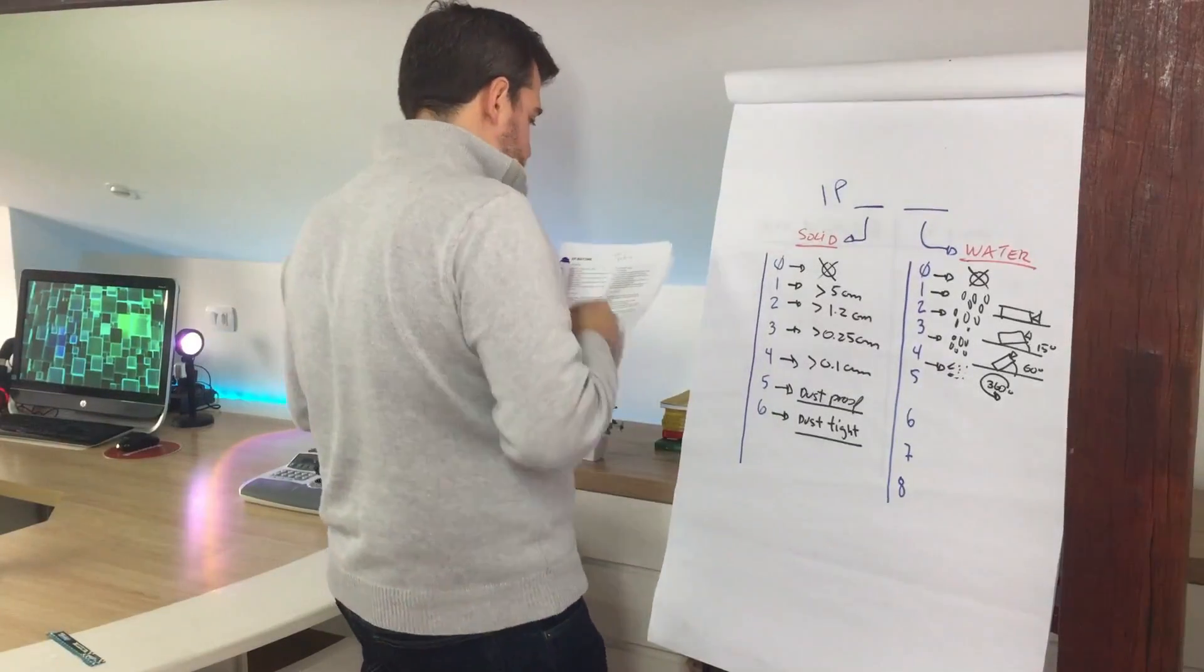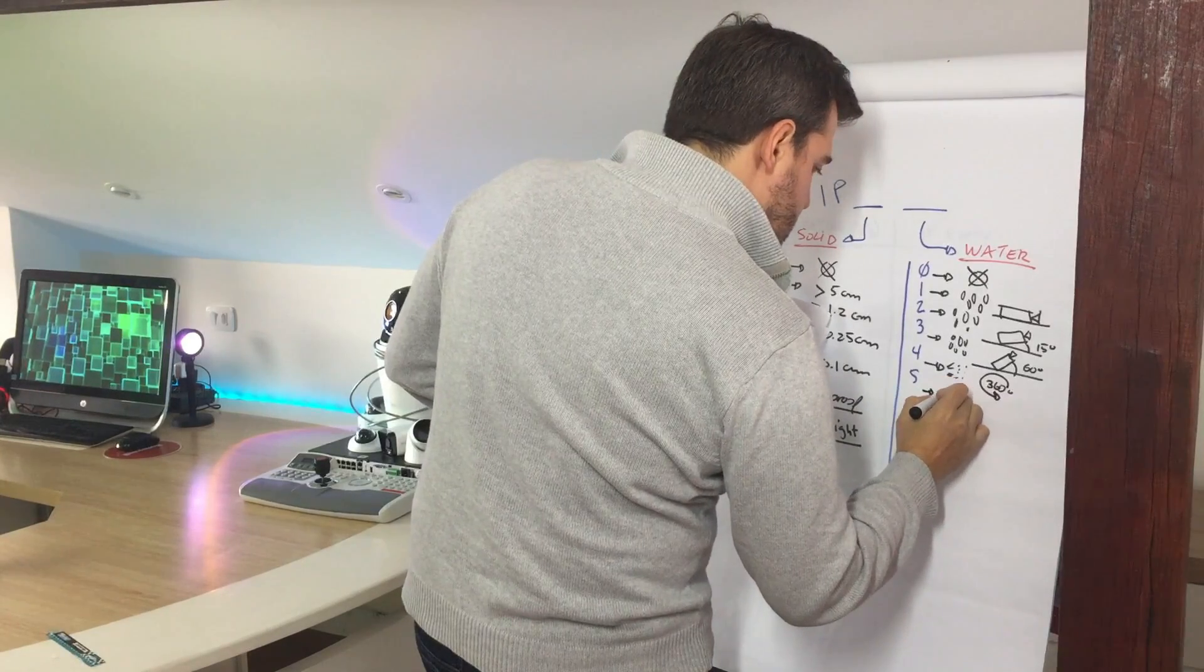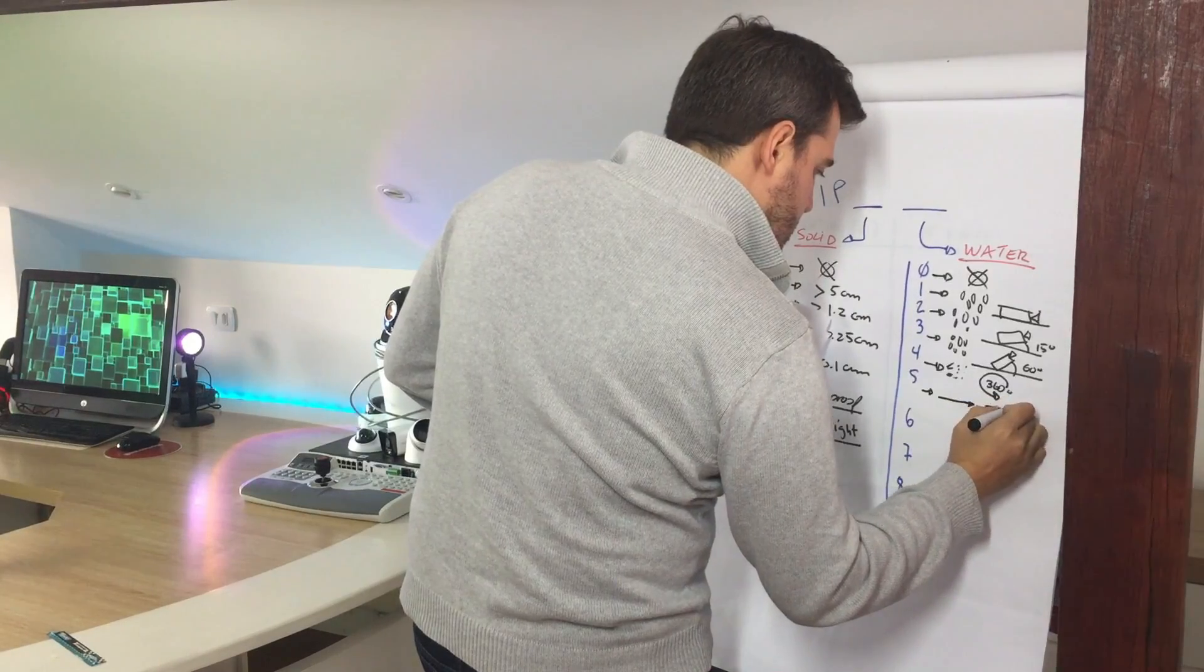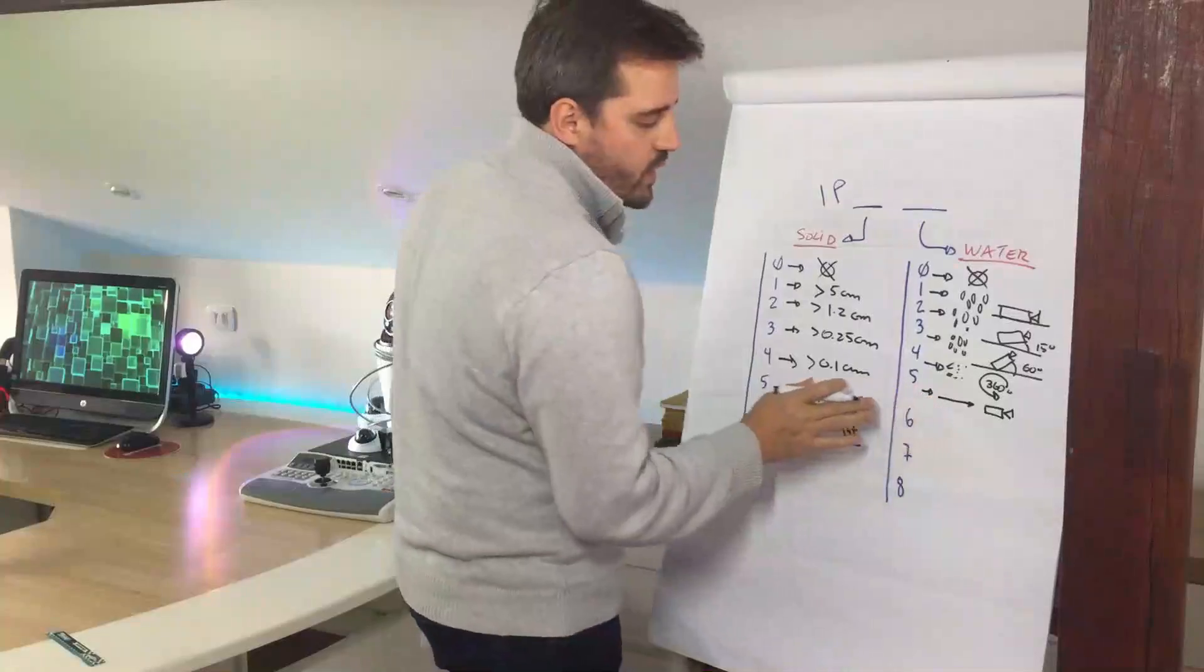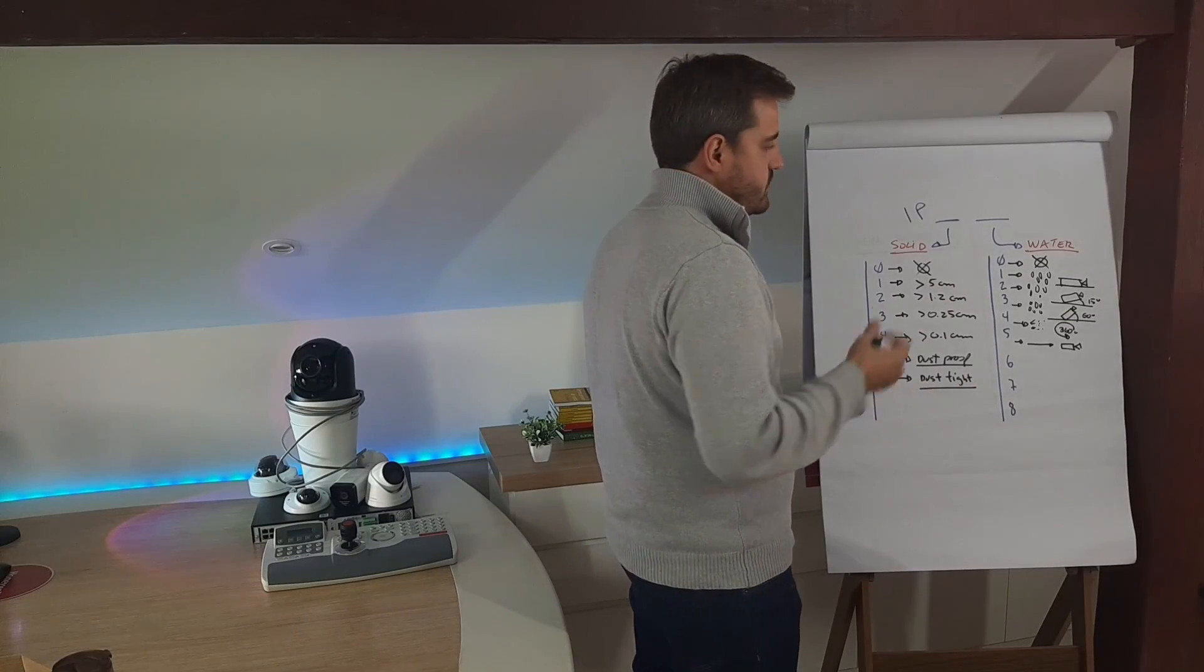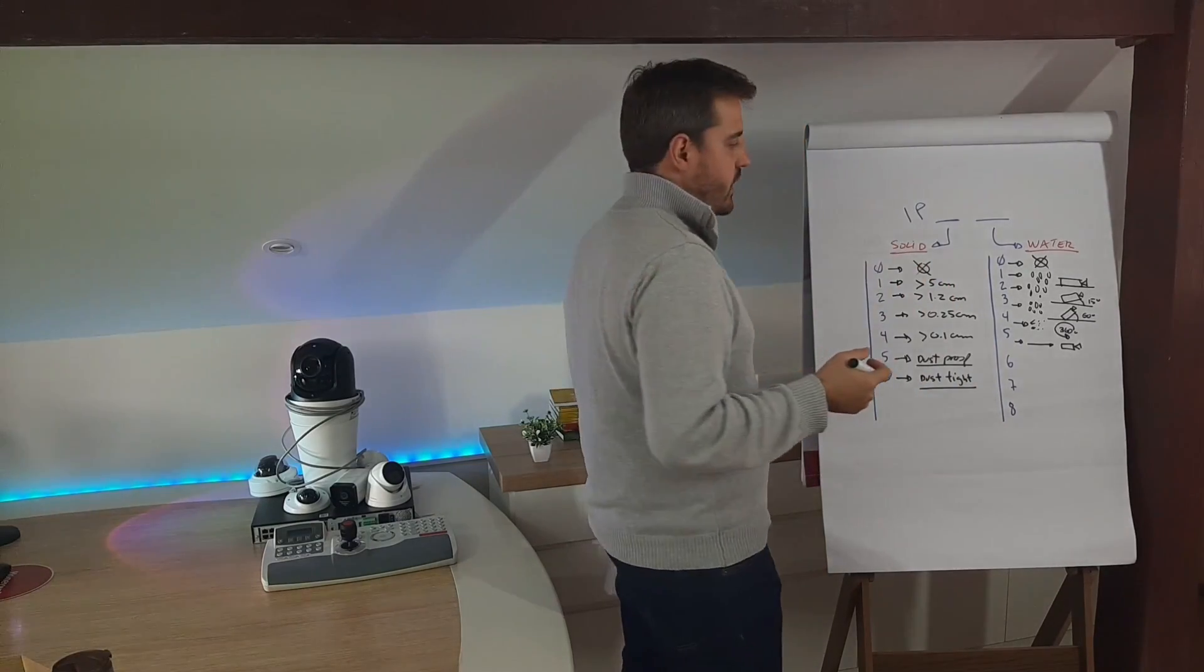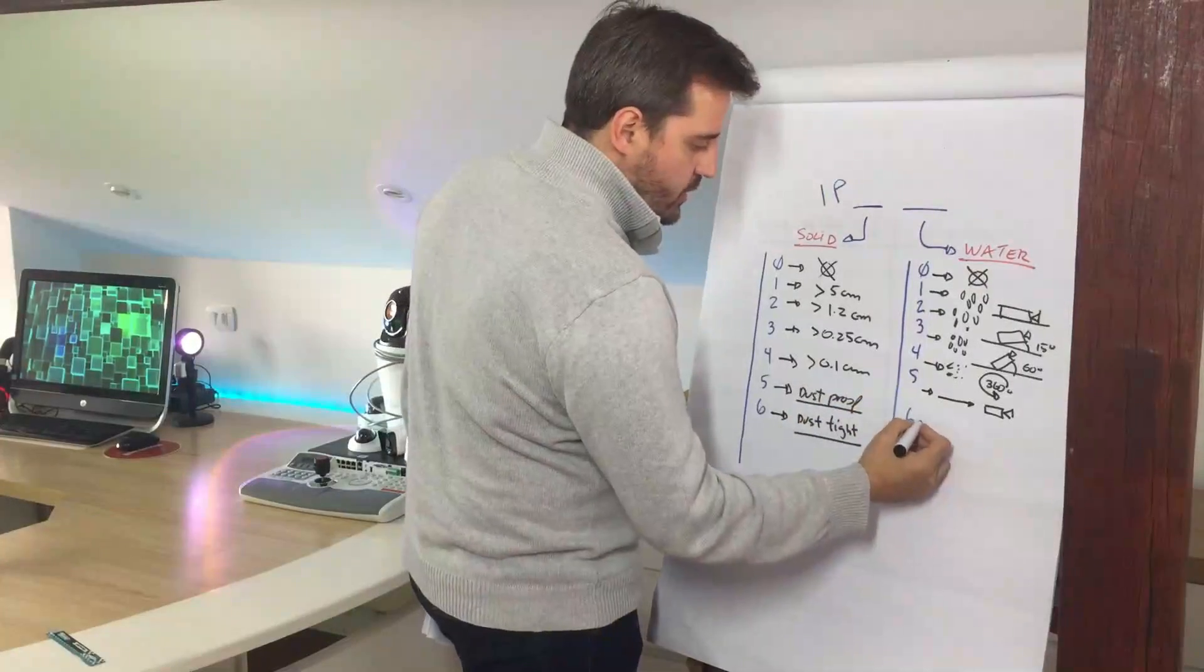So number five, we are talking about a weak jet of water on the camera in any direction. It's still possible to enter an insignificant moisture in the camera, but it will be able to handle a weak jet of water.